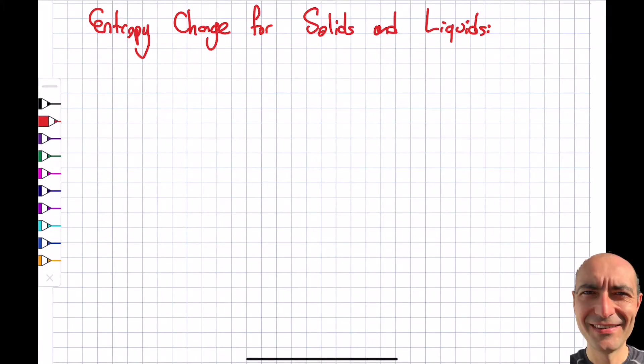I talked about the entropy change for pure substances in a segment two back. In the last segment I introduced you to a couple of relationships between T and ds and other properties. Now I'm in a good position to look at the entropy change of solids and liquids. The next segment will focus on the entropy change for ideal gases, so I'll be able to cover pretty much everything we've covered in this course.